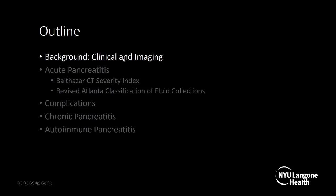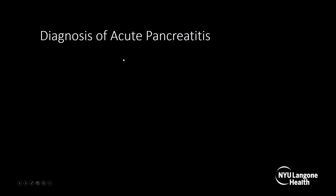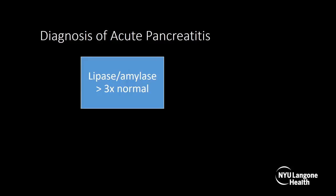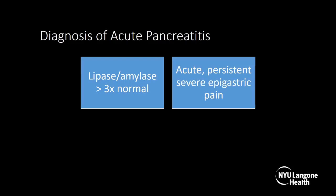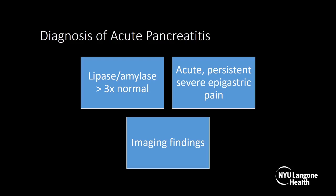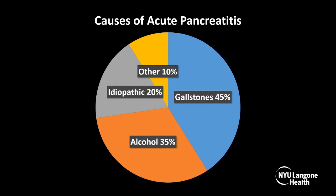We'll start with some background information. How do you diagnose acute pancreatitis? It can either be with a lipase or amylase over three times normal, with a clinical history of acute, persistent, severe epigastric pain, or characteristic imaging findings of acute pancreatitis, which we'll discuss in this lecture. You need two of the three of these for diagnosis of acute pancreatitis.